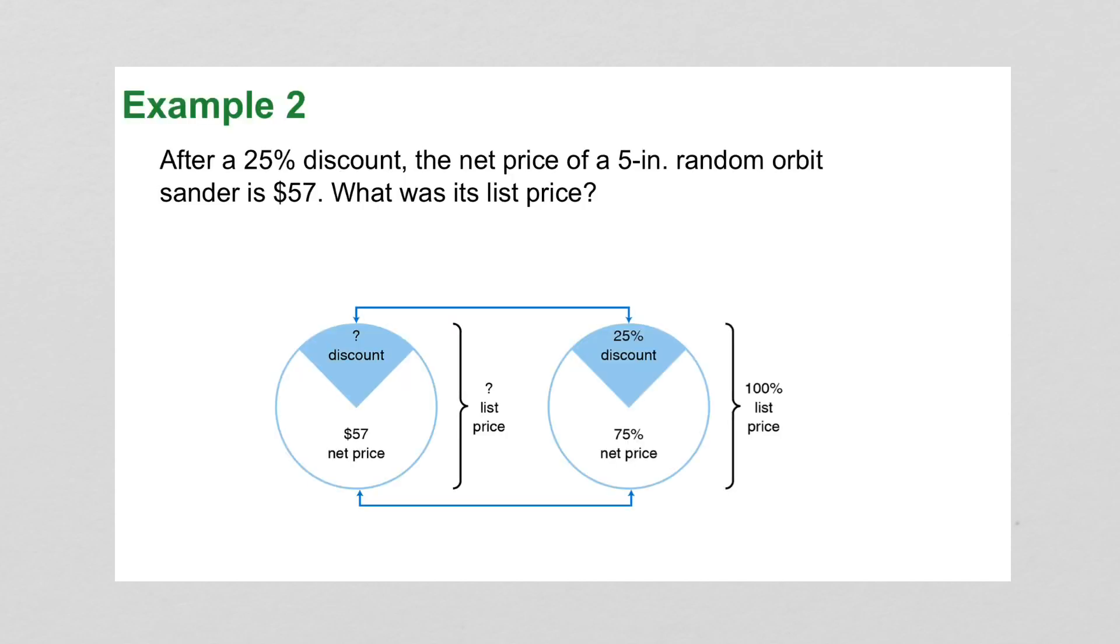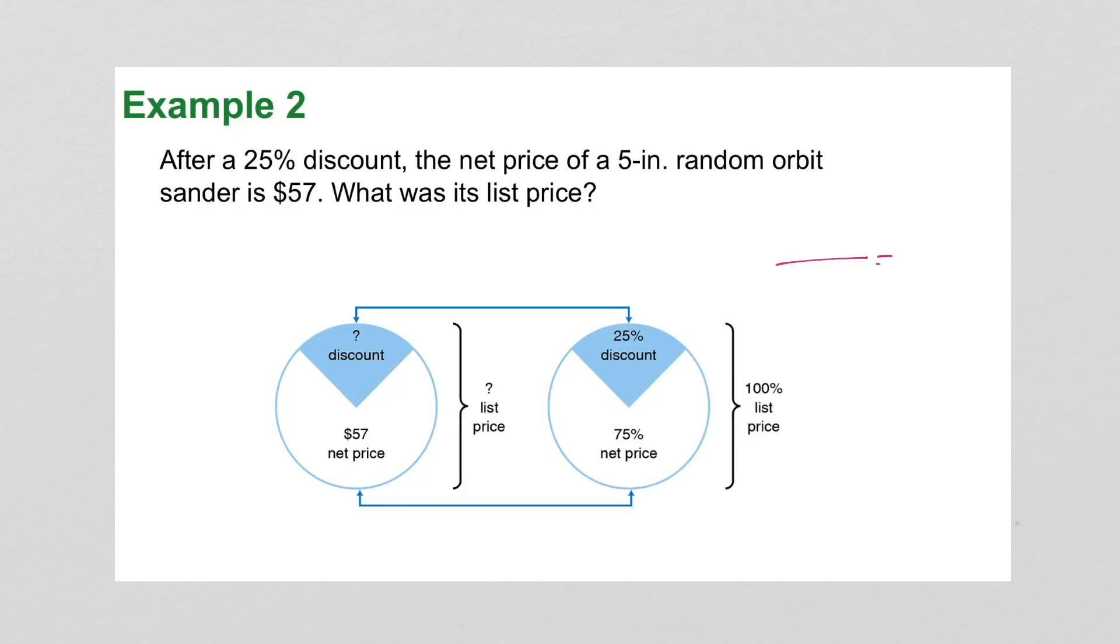Example two says, after a 25% discount, the net price of a five-inch random orbit sander is $57. What was its list price? So the new price is $57.